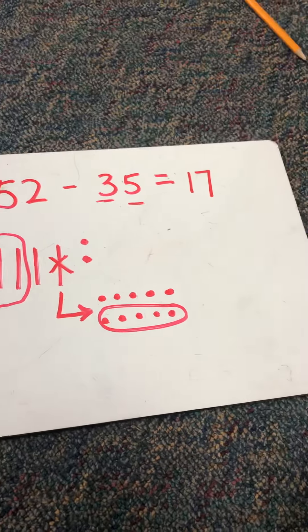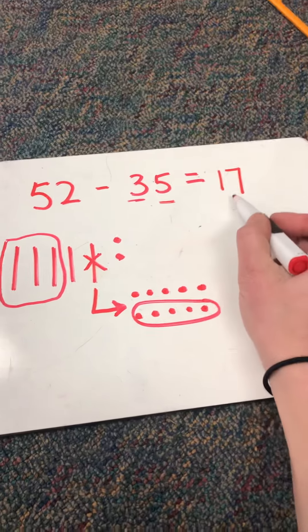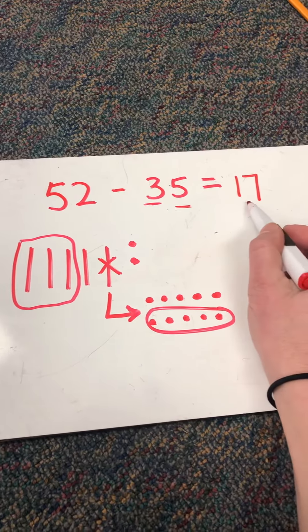And in order to check their answers, they can always add 17 plus 35 to see if it makes 52. So let's check it. Five and seven is 12, 30 and 10 is 40. And we know that 40 plus 12 is 52.